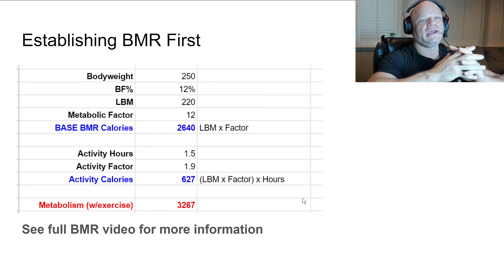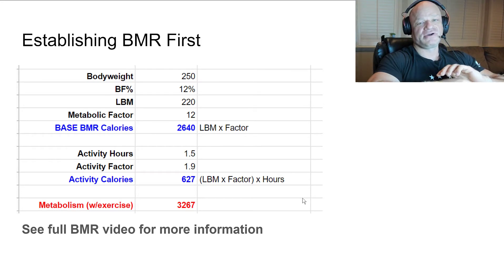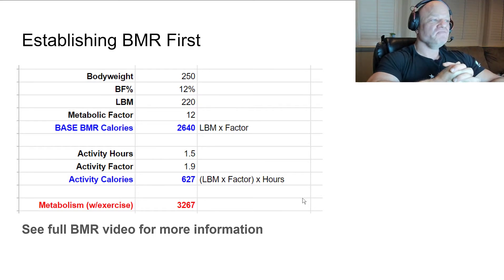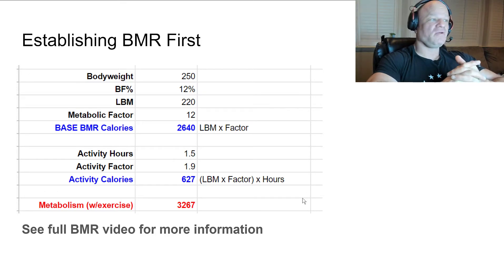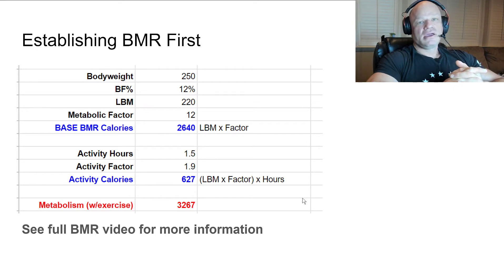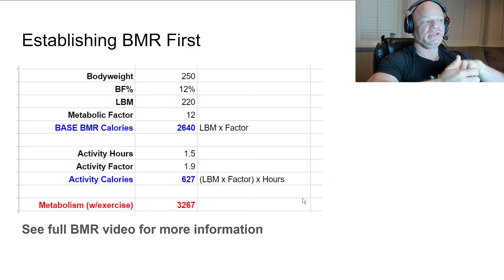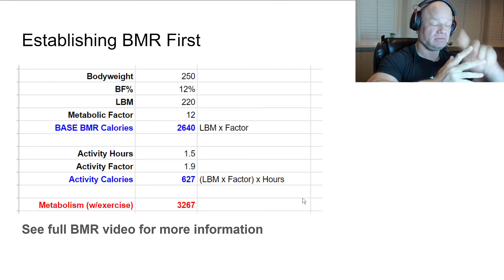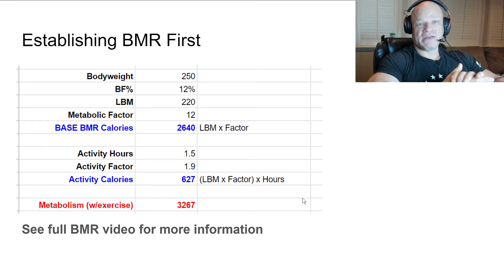I've already done a video on this, but I'm going to give you a high level look at establishing what your base metabolic rate is. I use a formula that considers your body fat percentage, your lean body mass, your body weight, and your activity level to come up with a base metabolic rate. Here's an example of where I'm at right now.